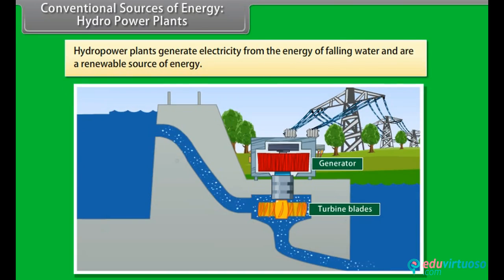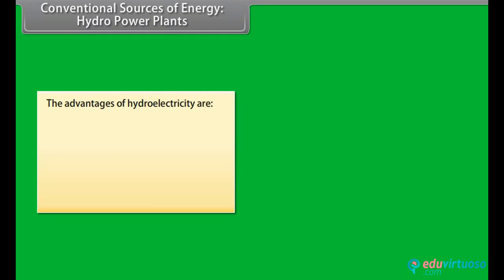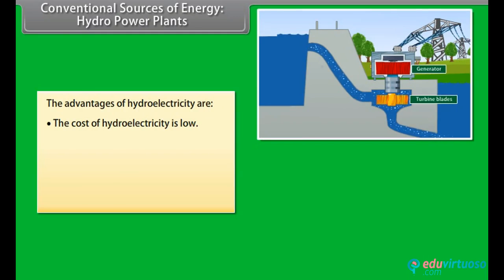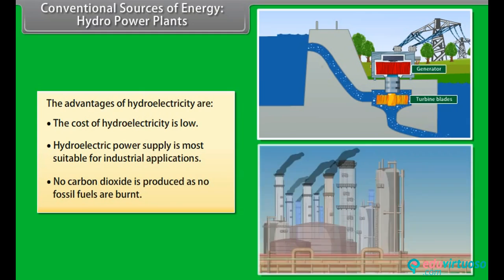Conventional sources of energy — Hydro power plants. Hydro power plants generate electricity from the energy of falling water. Hydro power is a renewable source of energy. The advantages of hydroelectricity are: the cost of hydroelectricity is low, hydroelectric power supply is more suitable for industrial applications, and no carbon dioxide is produced as no fossil fuels are burnt.